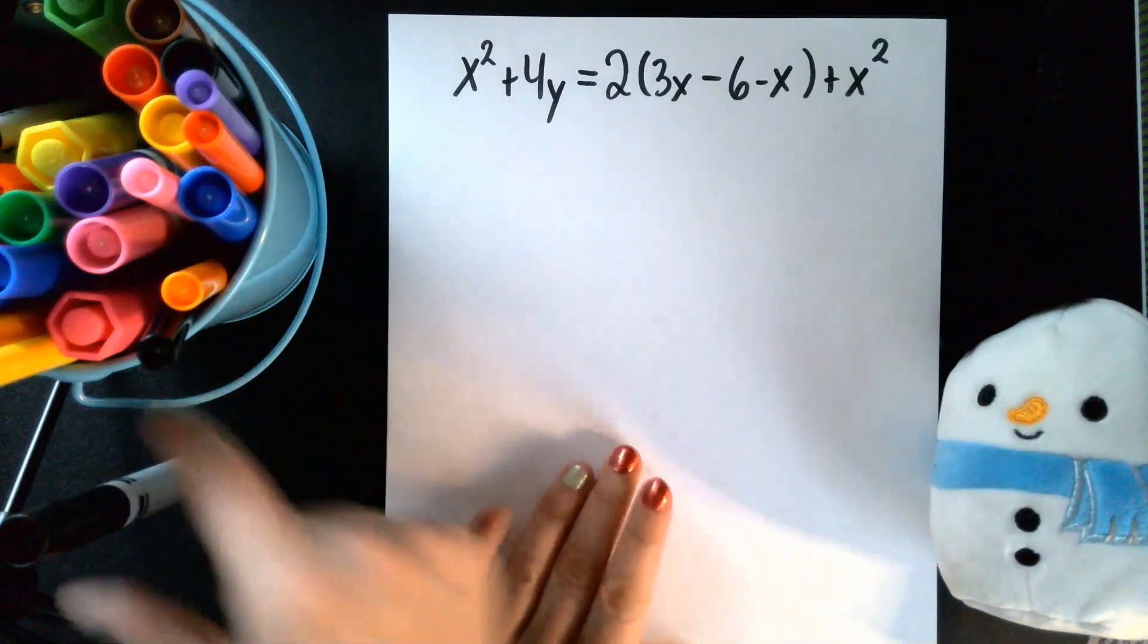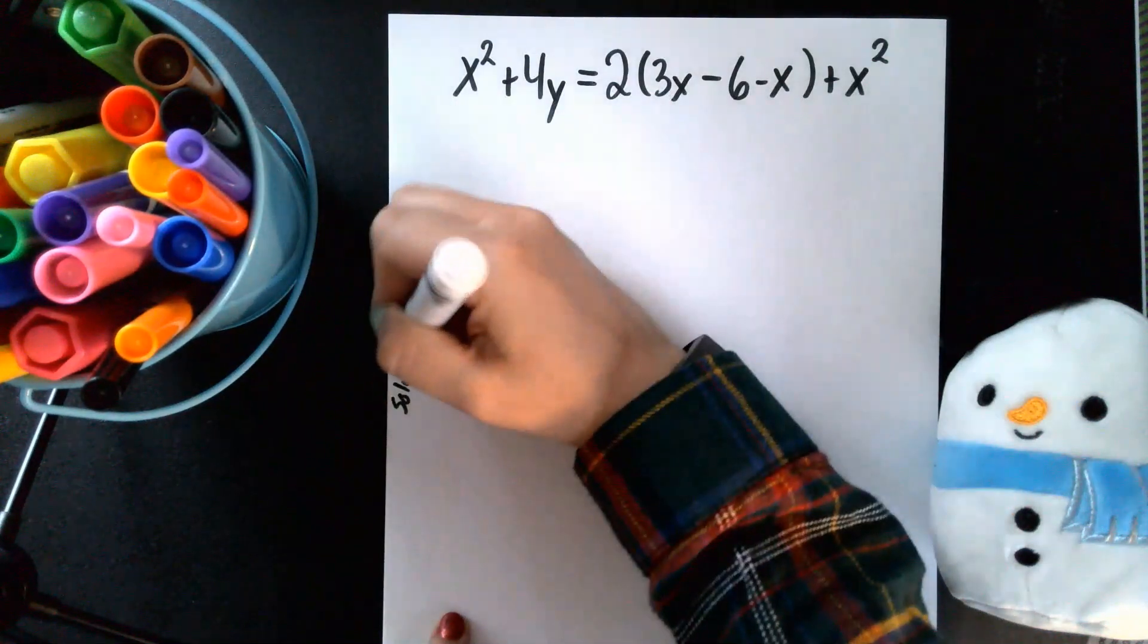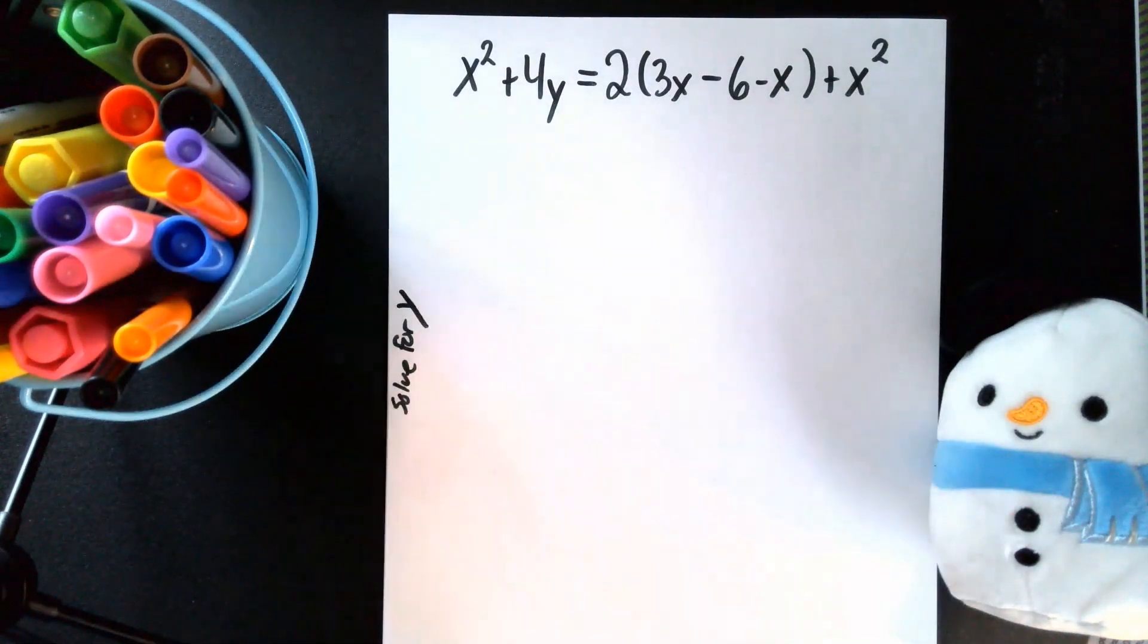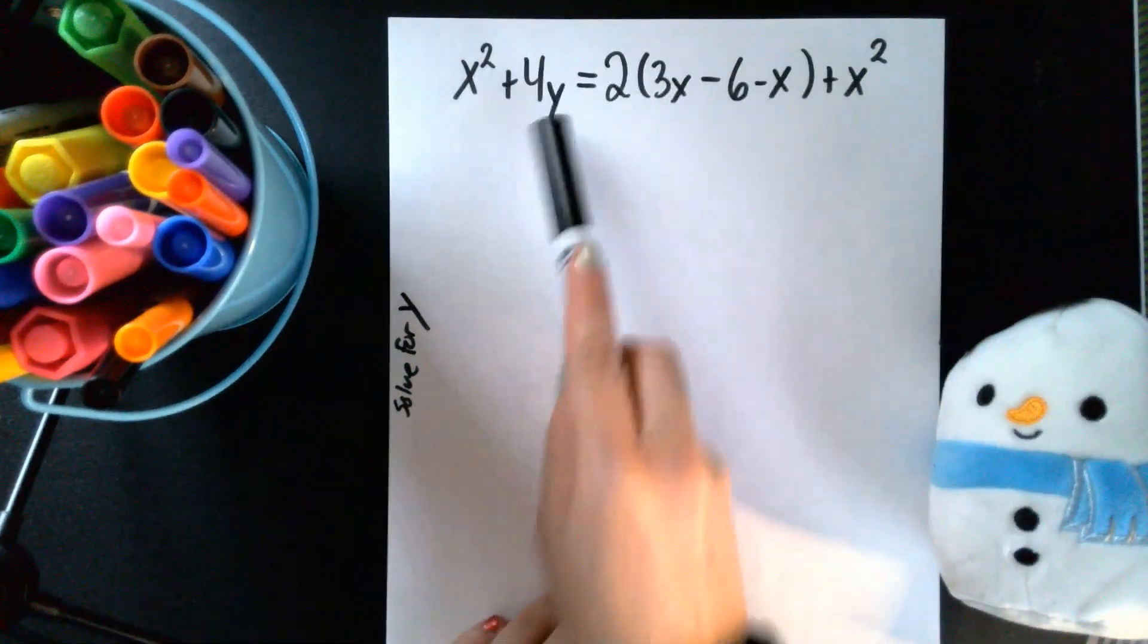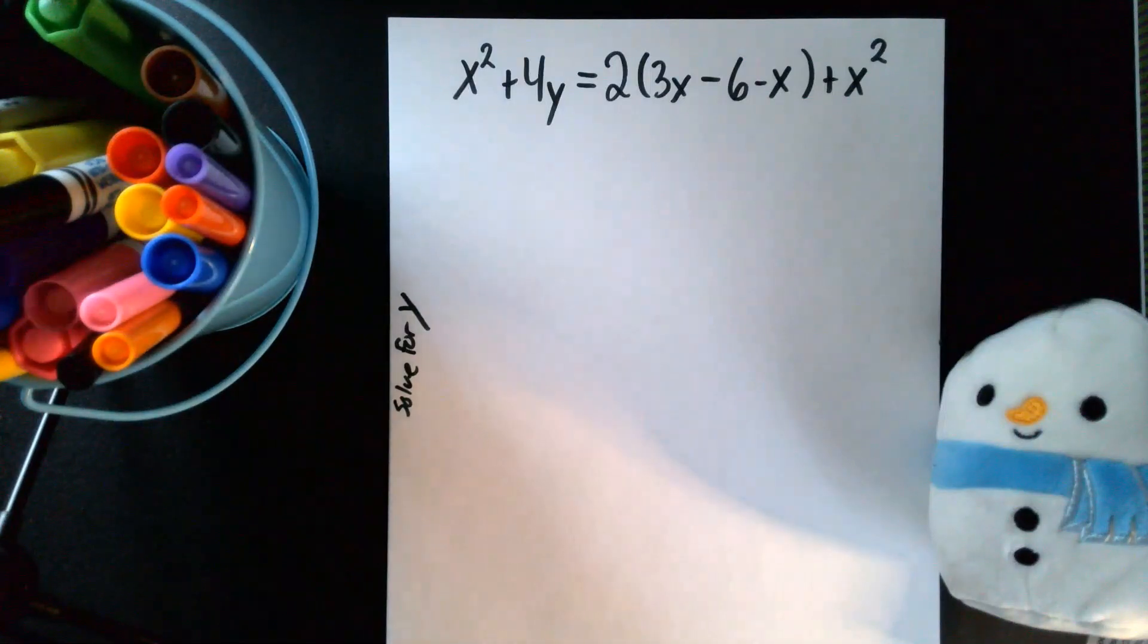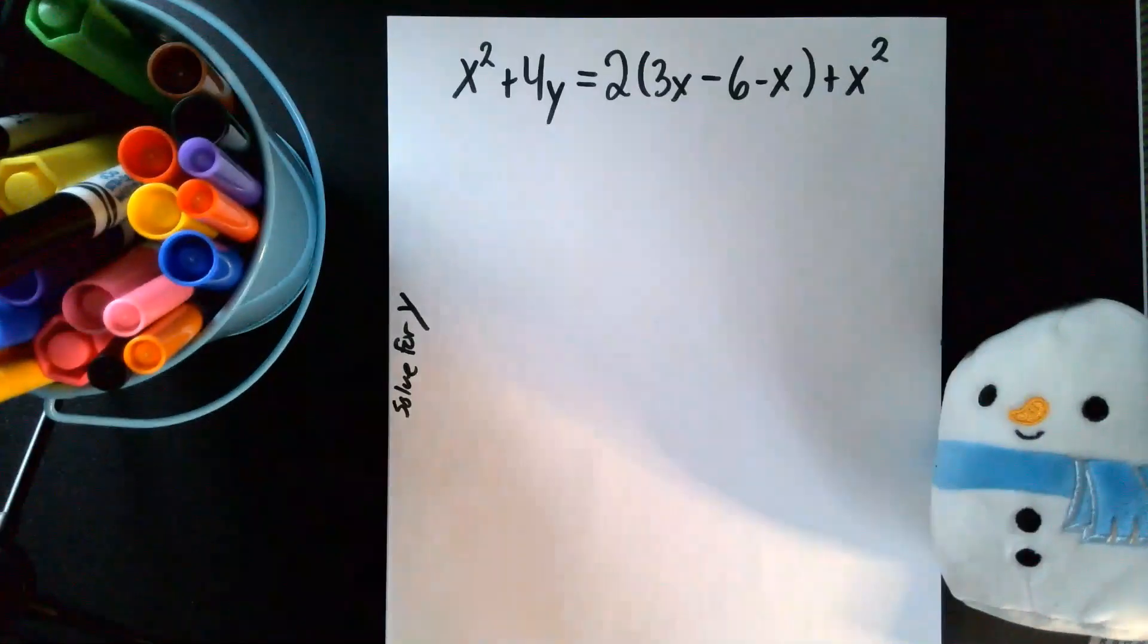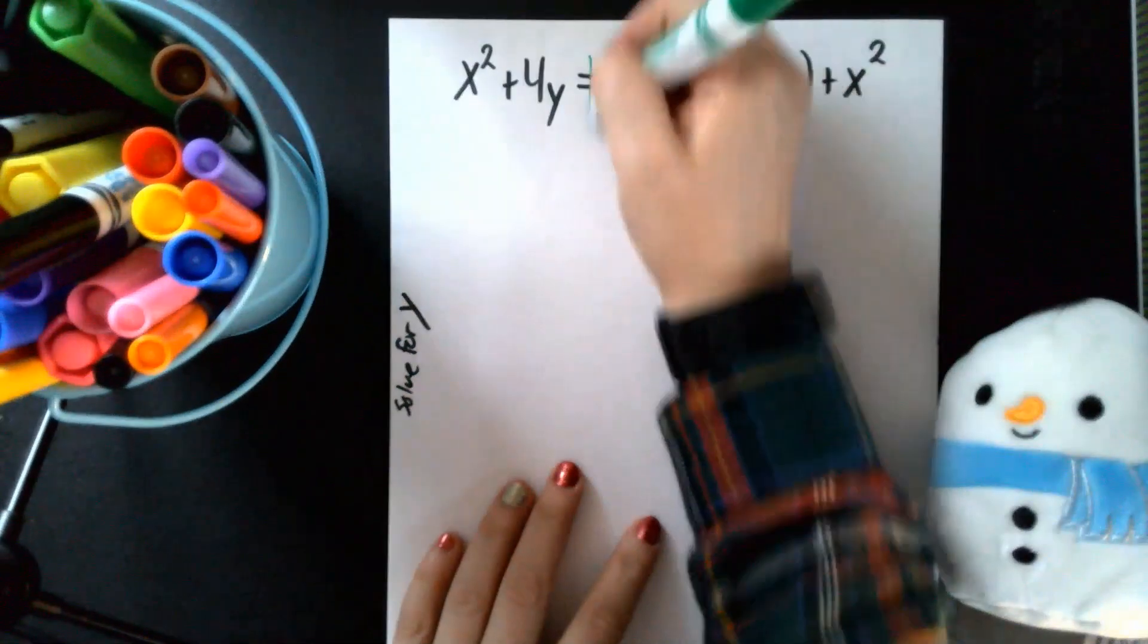In this problem they asked us to solve for y. So my goal is to get this guy all by himself. That's actually remarkably easy to do, at least it's easy to get all four y's isolated. Then just getting one y is the tricky part. So let's get started with our line.